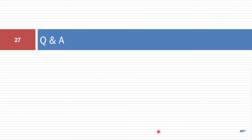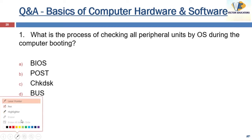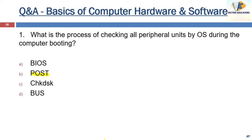Now coming to the question answers. What is the process of checking all peripheral units by the OS during computer booting? Peripherals are externally connected devices, and booting means starting. The correct answer is POST — Power On Self Test. It verifies all hardware is working properly during computer booting. If the computer does not pass POST, it will not boot. It is a diagnostic program built into the computer's hardware.